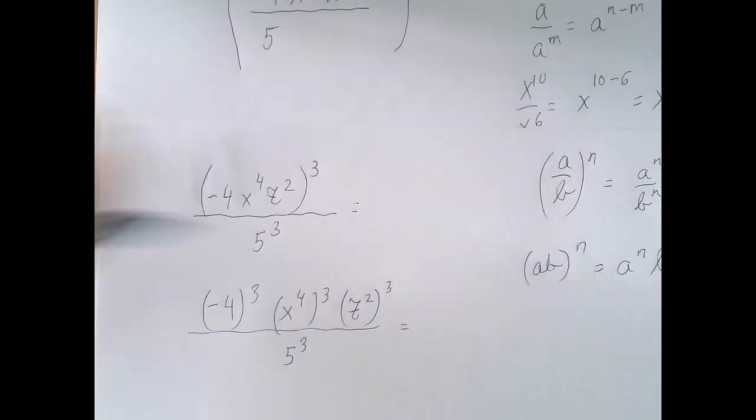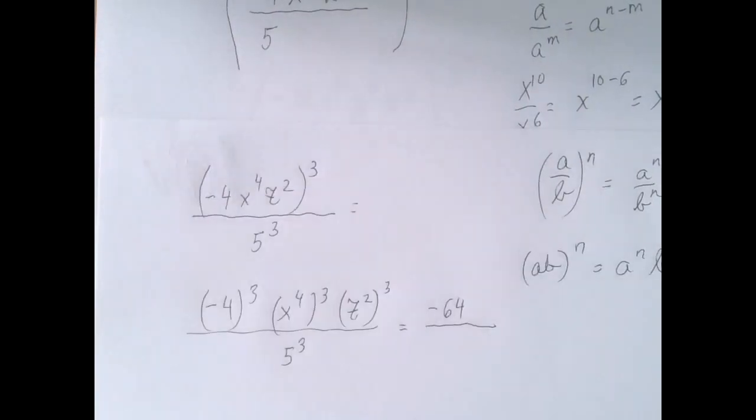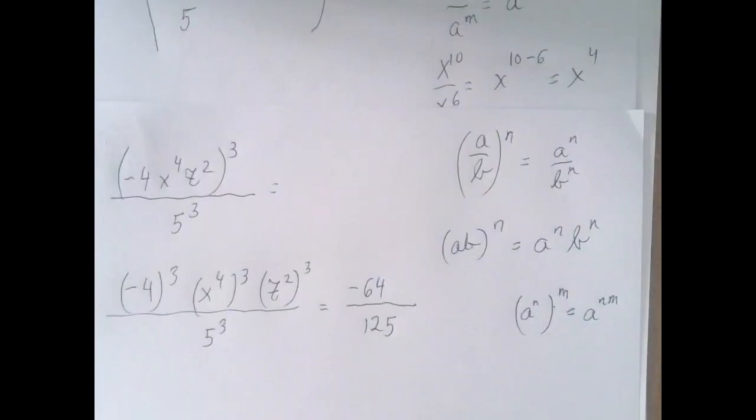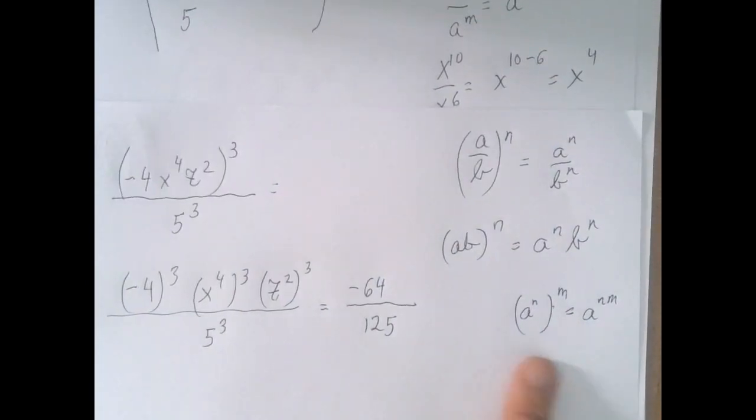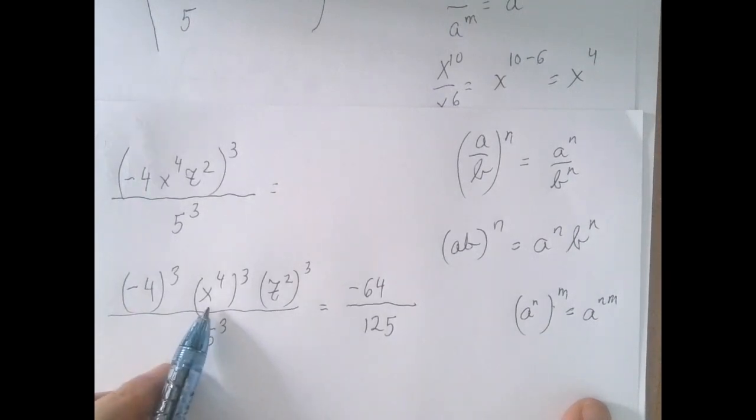Negative four to the third power is negative 64, and five to the third power is 125. And now we're going to use this rule of exponentiation. According to that, x to the fourth power further raised to the third power is x to the four times three power.